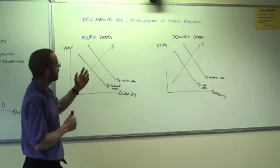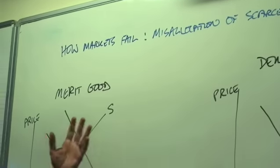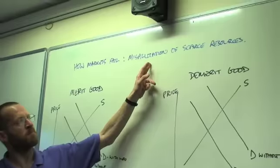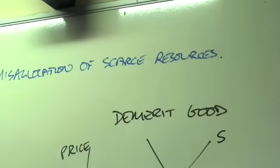These two diagrams show how markets fail if the good is either a merit good or a demerit good. Markets fail because there is a misallocation of scarce resources.